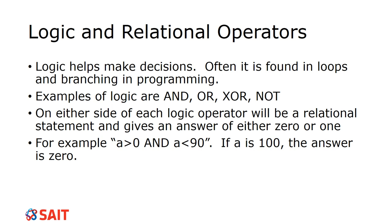XOR means exclusive OR, so only one of them can be true — you can't have two that are both true. For example, if 'a greater than 0 XOR a less than 90' and a equals 75, XOR answers as false (0) because both conditions are true simultaneously, and XOR requires exactly one to be true.